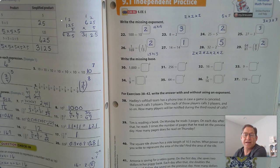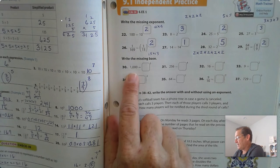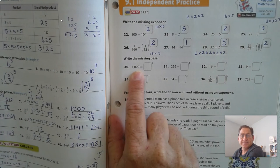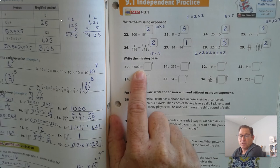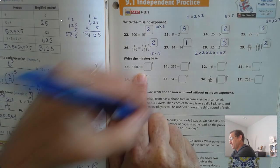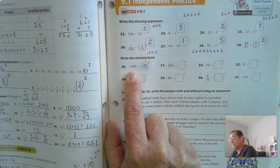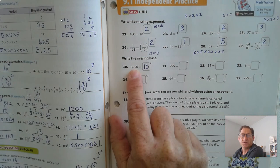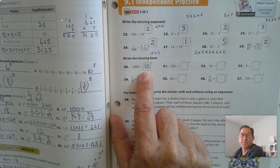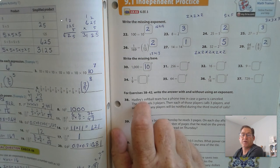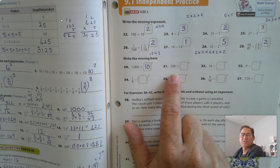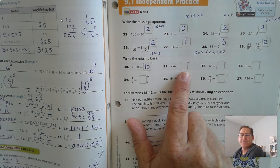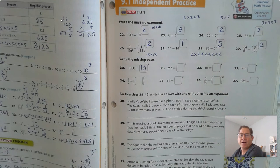Now write the missing base. So we know that if a number ends in zeros, that is base 10 basically. And the number of zeros tells us the exponent. So there are 3 zeros, so it's going to be 10 to the third.